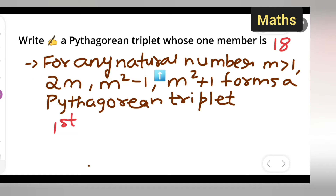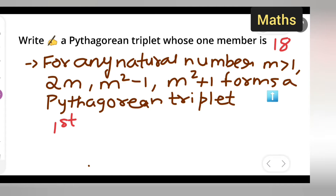For any natural number m greater than 1, we write down 2m, m²-1, and m²+1 — these three form a Pythagorean triplet.